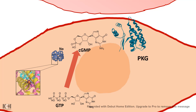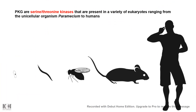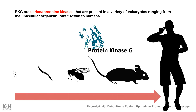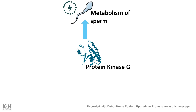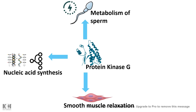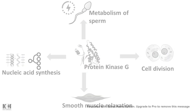Cyclic GMP binds to protein kinase G, which is a serine-threonine kinase. Protein kinase G is present in all eukaryotes, from paramecium to humans, and is a well-conserved enzyme. It is important for metabolism, sperm nucleic acid synthesis, muscle relaxation, cell division, and many other functions.